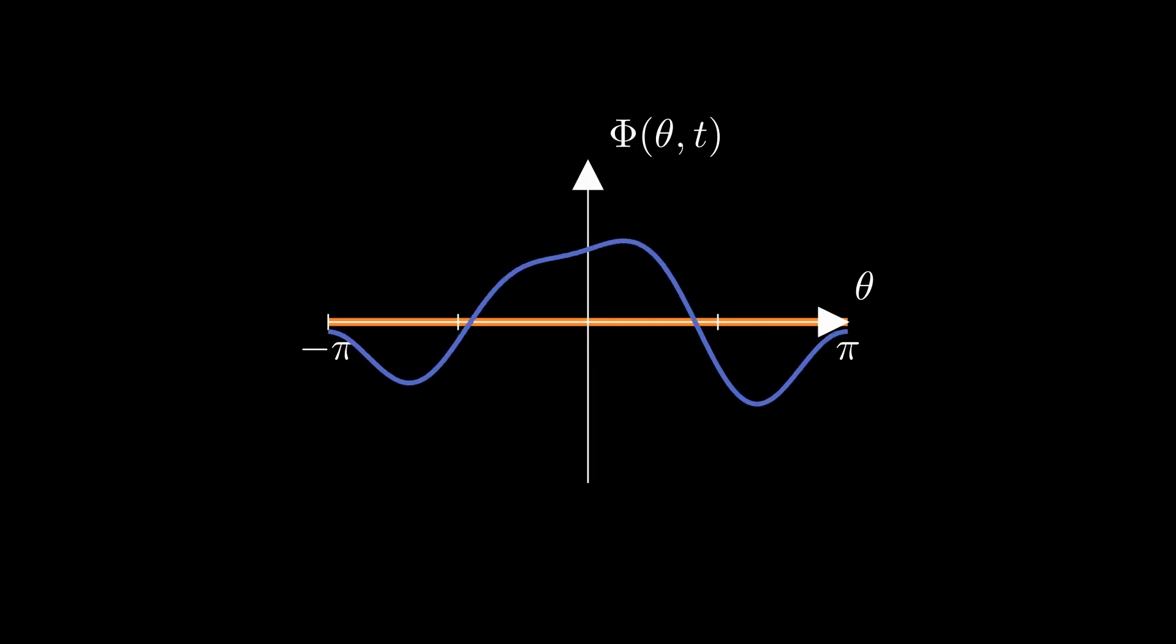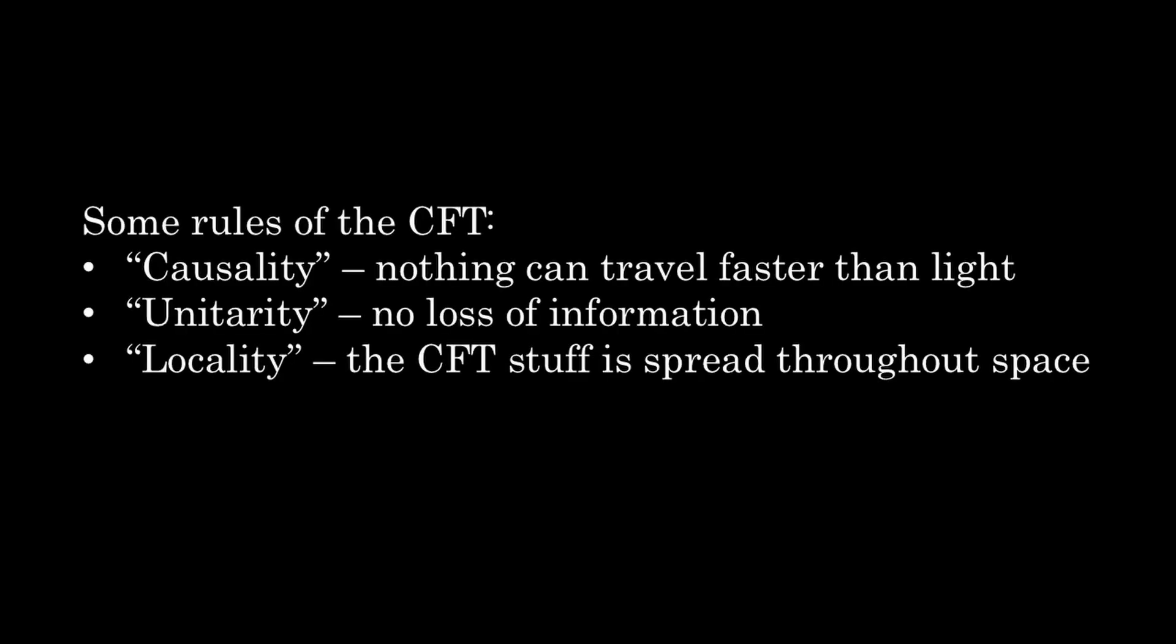The dynamics of these fields is encapsulated in a set of allowed energies, and these are closely related to the frequencies at which the fields can wiggle. These dynamical rules can take many forms, corresponding to the many kinds of CFTs we could consider. However, there are some basic rules in common to all of them. One of these is that no signal can travel faster than the speed of light. Again, the time it takes a light pulse to cross from one side of the circle to the other is pi, and nothing can travel faster than this. We'll come back to this later.